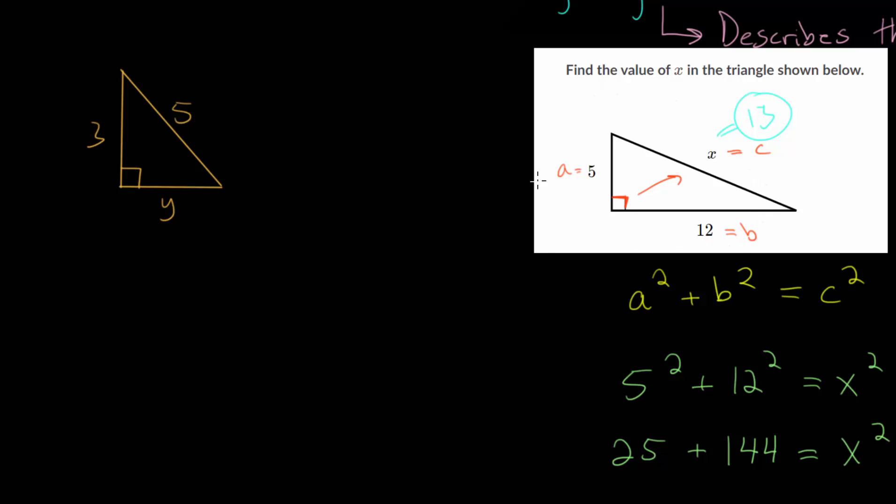And like I mentioned, when we work through this problem, it doesn't matter what you call A and B here. We can call this A and we can call this side B, or we can switch it. It doesn't really matter. But the hypotenuse, this has to be C in this theorem.